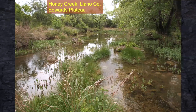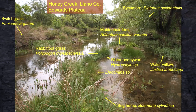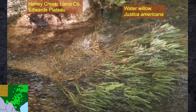This is my favorite stretch of any creek in Texas — Honey Creek in Llano County. I think this ranch is now under a conservation easement. Look at the plant diversity here: water willow, switchgrass, sycamore, bog hemp, spike rush, water pennywort, maidenhair fern. A beautiful creek that flows water year-round.